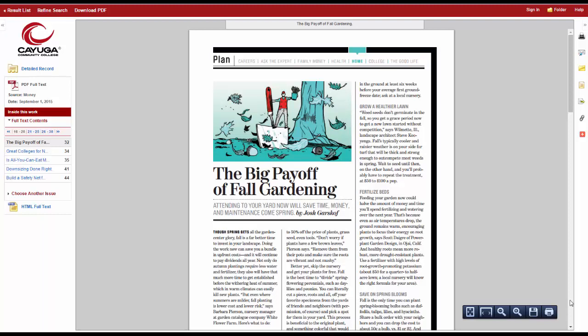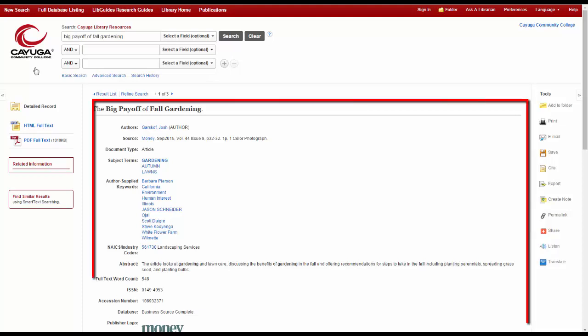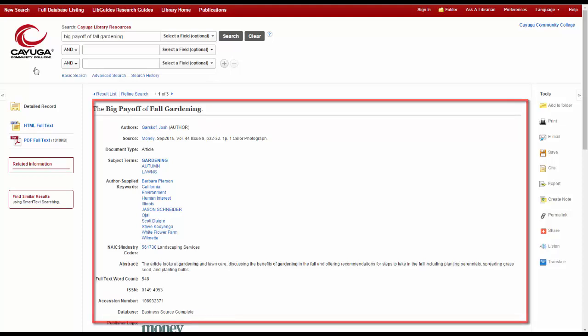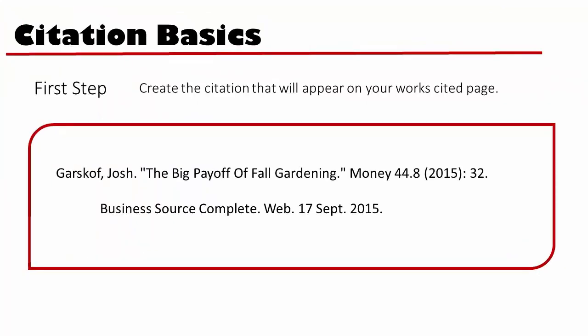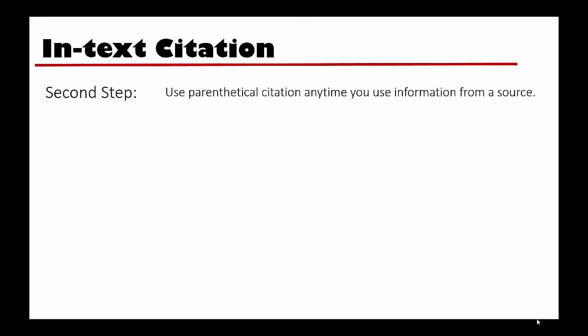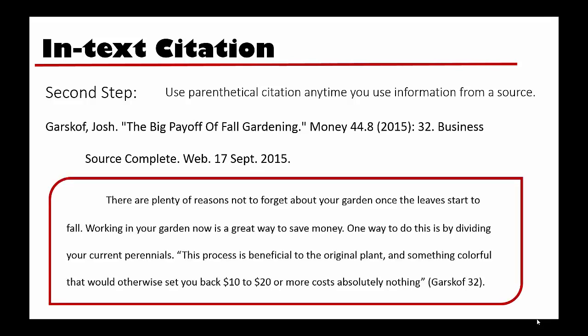You can find the information within the source itself, or if you're using a library resource, you can look in the record for the item to find much of the information you'll need. Here's what our citation would look like for that source. Once you have the citation for your source, you will be able to format your in-text citations. Your in-text citation should lead anyone reading your paper directly to the appropriate entry on your Works Cited page. This is the entry we created for our source. When citing our source, our in-text citation should lead the reader directly back to the citation on our Works Cited page.